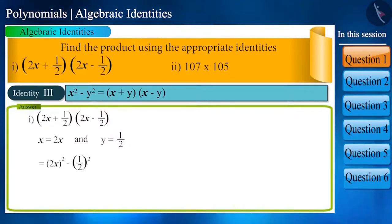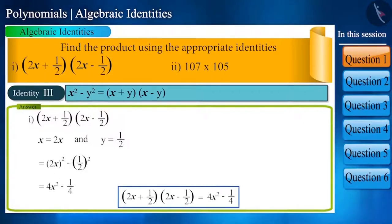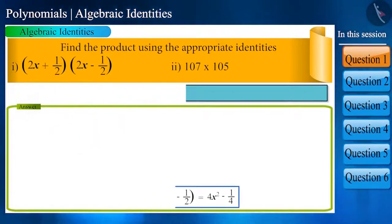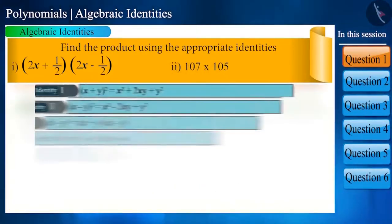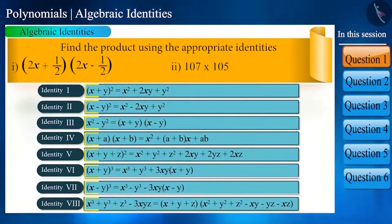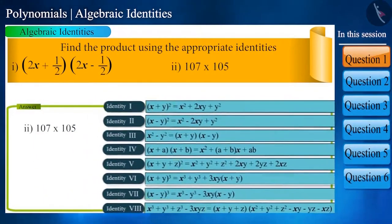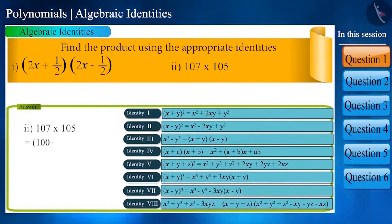After solving this, we will get 4x square minus 1 by 4. Now let's find the solution to another sub-question in a similar way. All identities are related to the addition or subtraction of two terms. If we write it in the form of 100 plus 7 into 100 plus 5,